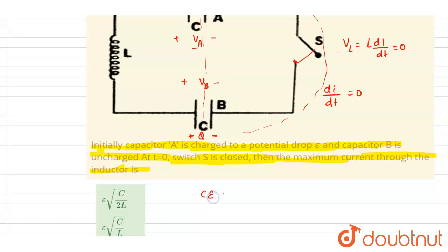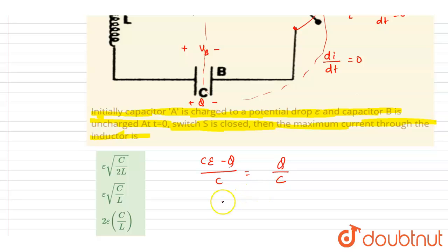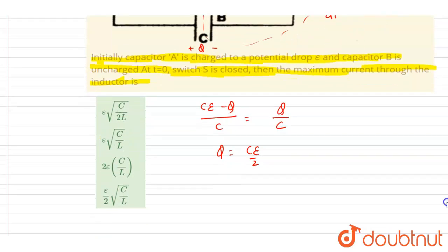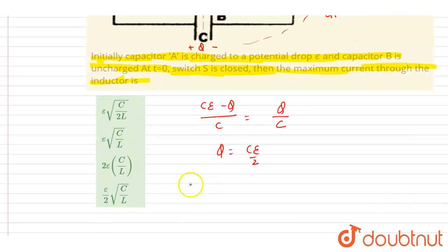Setting the potential differences equal: (Ce minus q)/C = q/C. The C cancels, giving Ce minus q = q, so q = Ce/2. This charge Ce/2 is on the capacitor plates when the current is maximum.